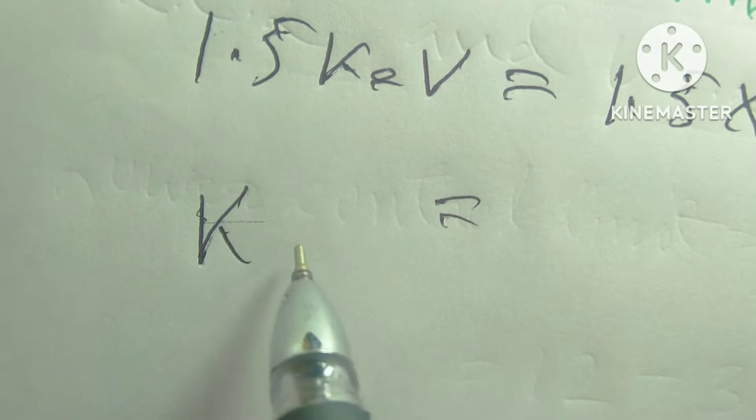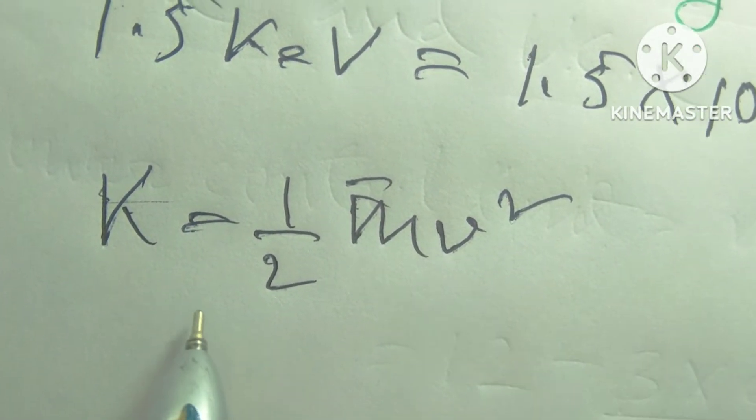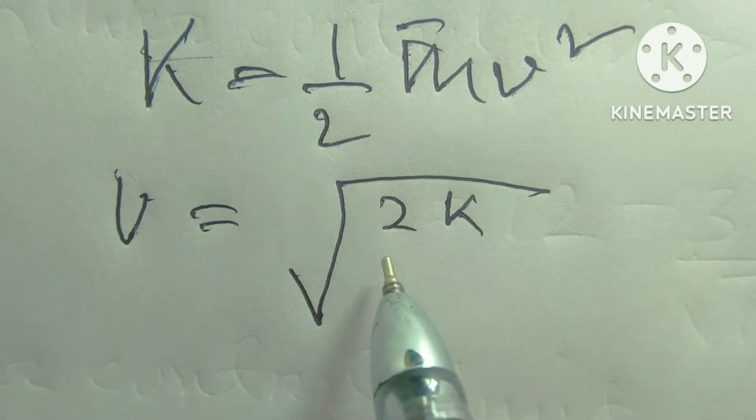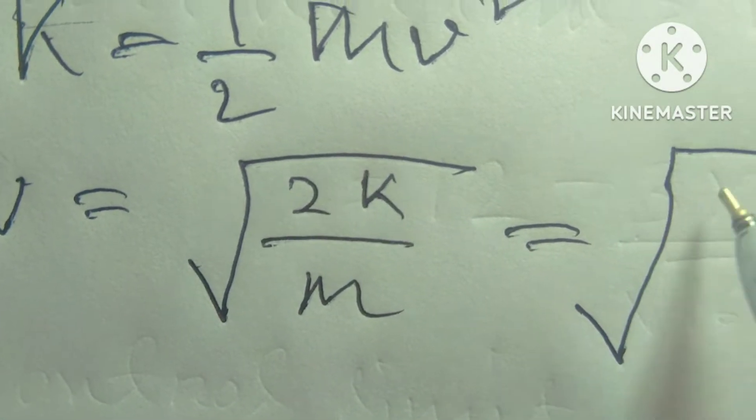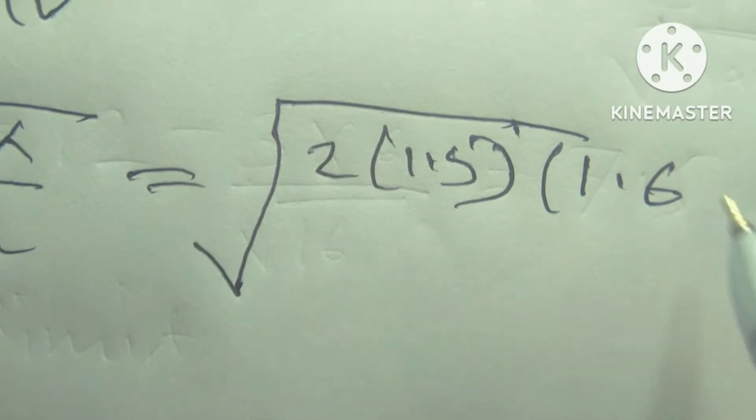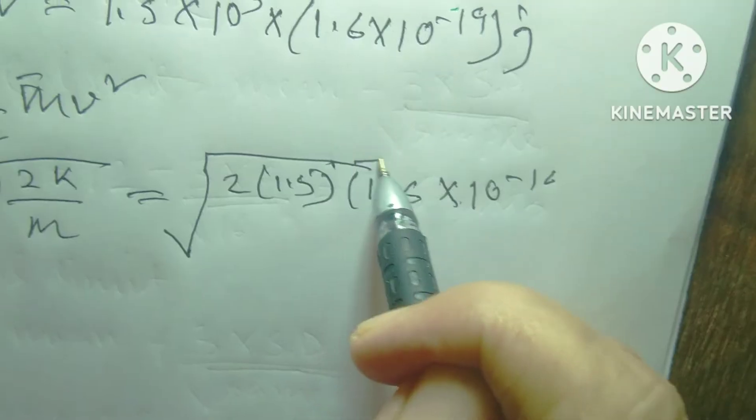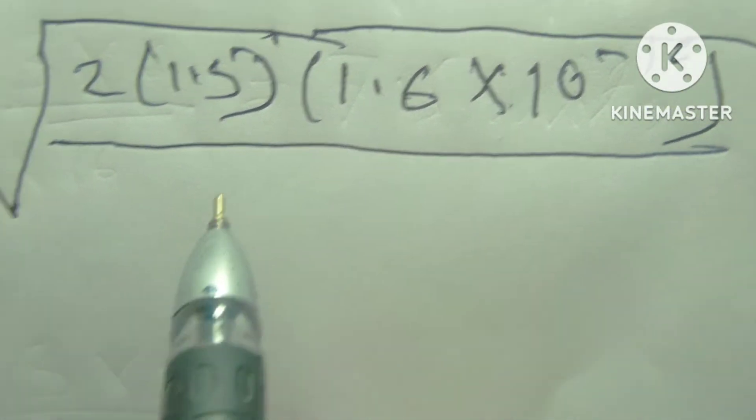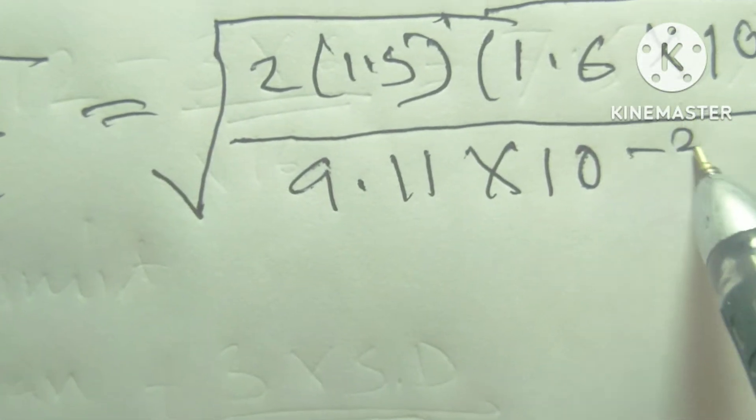Kinetic energy K equals half M V squared, and V equals root over 2K divided by M. And 2K divided by root over M equals 2 into 1.5 into 1.6 into 10 to the power minus 16, divided by 9.11 mass of the electron, 10 to the power minus 31.